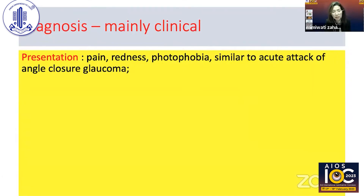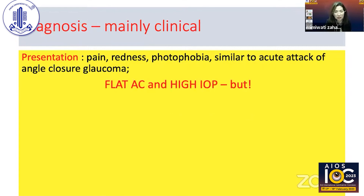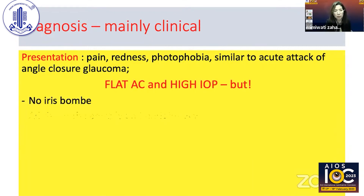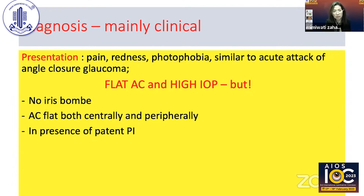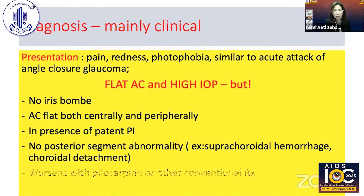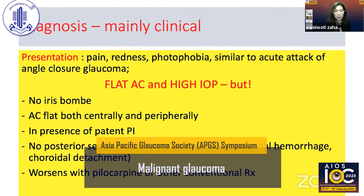Diagnosis is mainly clinical. It can look like an acute attack of angle closure glaucoma, and a high index of suspicion is needed. You still have high IOP and a flat anterior chamber; however, there is no iris bombé — the AC is flat both centrally and peripherally — and there is usually a patent peripheral iridectomy, which negates an acute angle closure attack. There is also no posterior segment abnormality such as suprachoroidal hemorrhage or choroidal detachment.